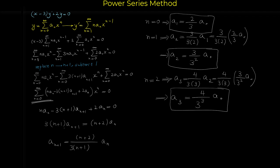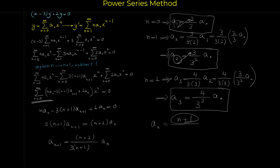In the numerators we have 2, 3, 4 — each one more than the index n. When n equals 1 the numerator is 2, when n equals 2 it is 3, when n equals 3 it is 4. So in general the numerator is n plus 1. In the denominators we have 3 to the 1, 3 to the 2, 3 to the 3 — so in general the denominator is 3 to the n. Therefore, a_n equals (n plus 1) over 3 to the n times a_0.